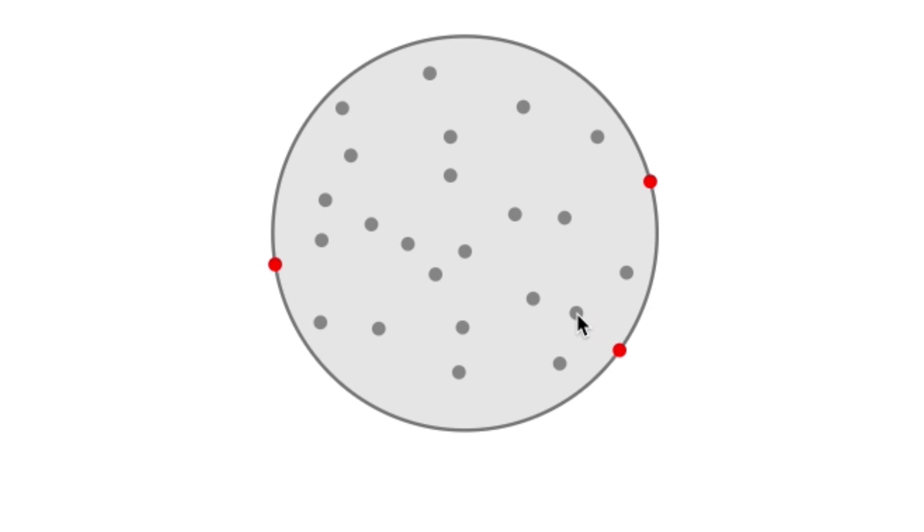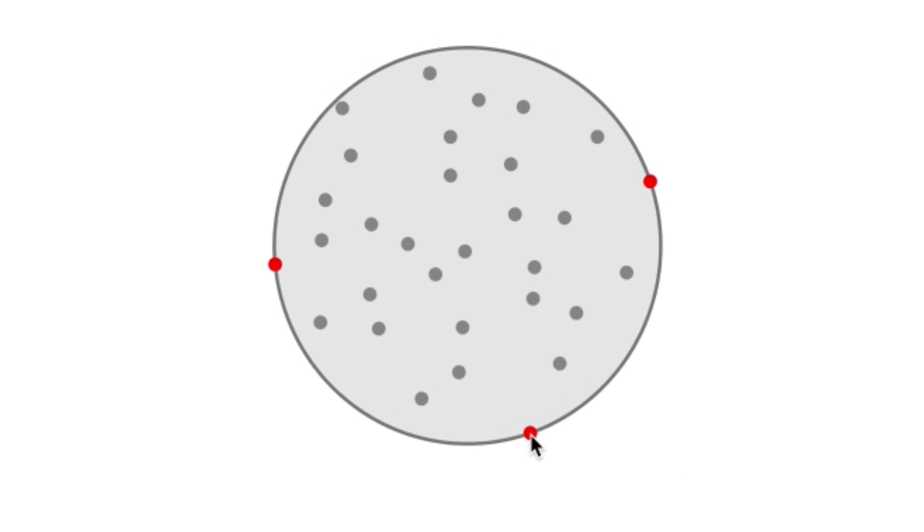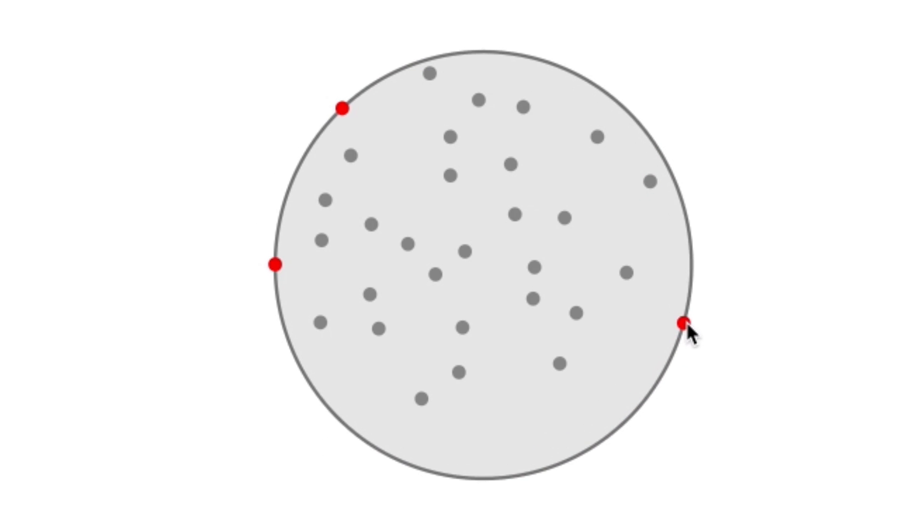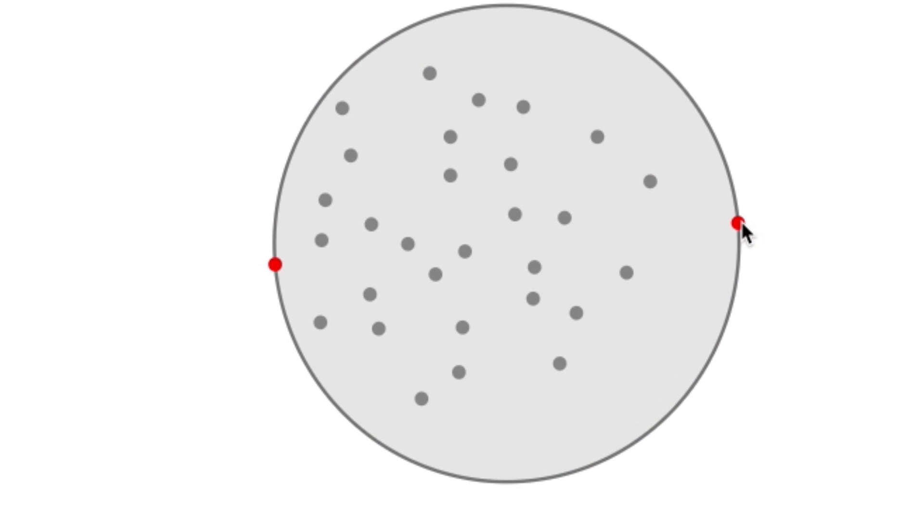Adding more points to the interior doesn't change anything. If I move some of the points around, then we see that the three points which define the circle do change. And it is possible for two points to define the circle, and when that happens, the points will guaranteed be on opposite ends of the diameter.